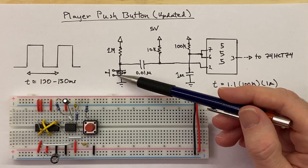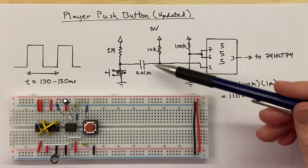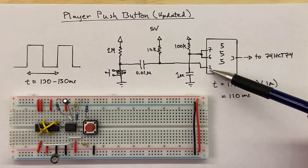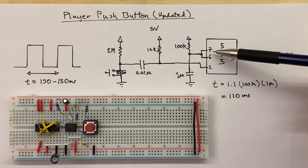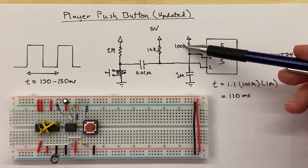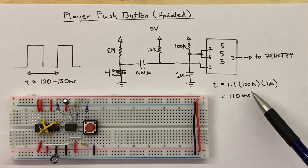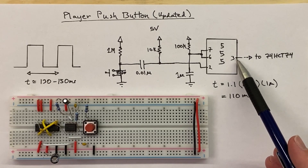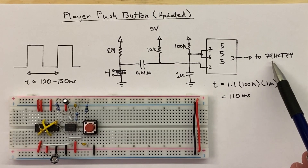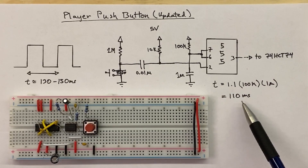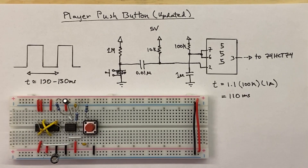Since the 555 is in monostable mode, pins 7 and 6 are tied together. A 100k resistor and a 1 microfarad capacitor will give us about 110 milliseconds according to the formula. The output goes to our two D flip-flops on the 74HCT74 chip. This will debounce our push button for about 110 milliseconds, which is less than the 130 millisecond minimum for consecutive presses, giving us a bit of margin. Let's hook it up to the breadboard and test it out.